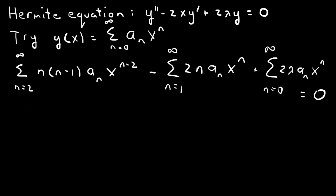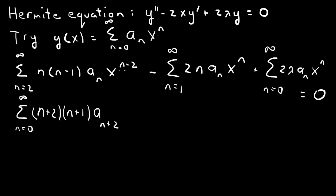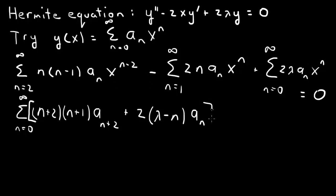We can write this as the sum from n=0 to infinity. Shifting the index so x^(n-2) becomes x^n means the coefficients shift up by 2: we get (n+2)(n+1)aₙ₊₂ times xⁿ. Combining the remaining two terms gives plus 2(λ - n)aₙ times xⁿ. All terms now share a common xⁿ, equal to 0.